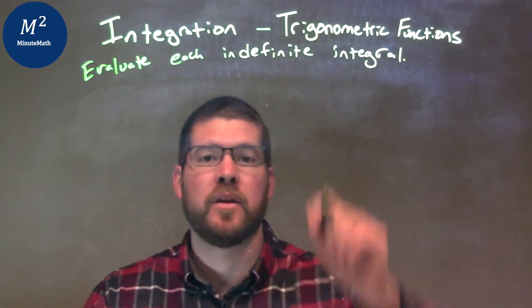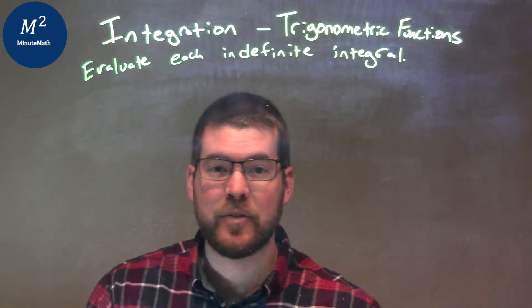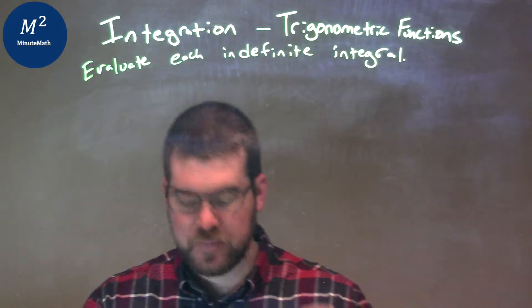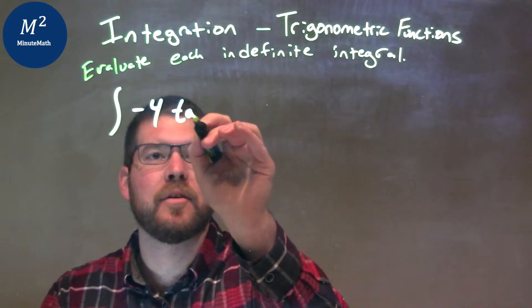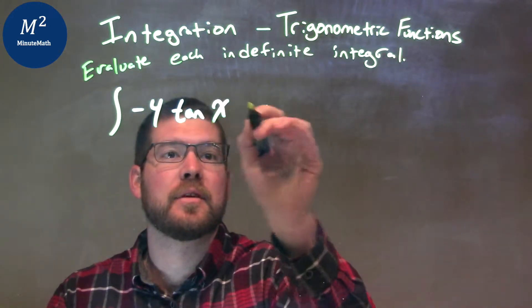We're going to evaluate each definite integral. So, if I was given this integral here, I have the integral of negative 4 tangent of x dx.